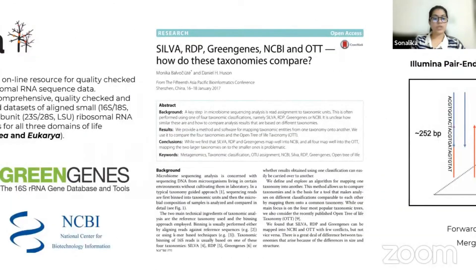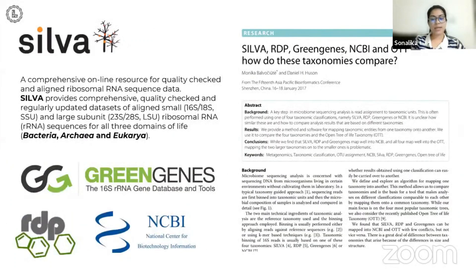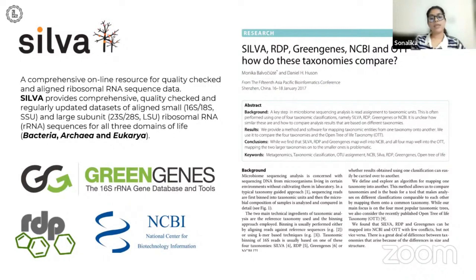Such OTU sequences are annotated by mapping onto a reference database such as the ribosomal database project, GreenGenes, or the SILVA database. These databases contain taxonomic information for the domains of bacteria, archaea, and eukarya, based primarily on phylogenies for small subunit rRNAs — 16S for prokaryotes and 18S for eukarya.